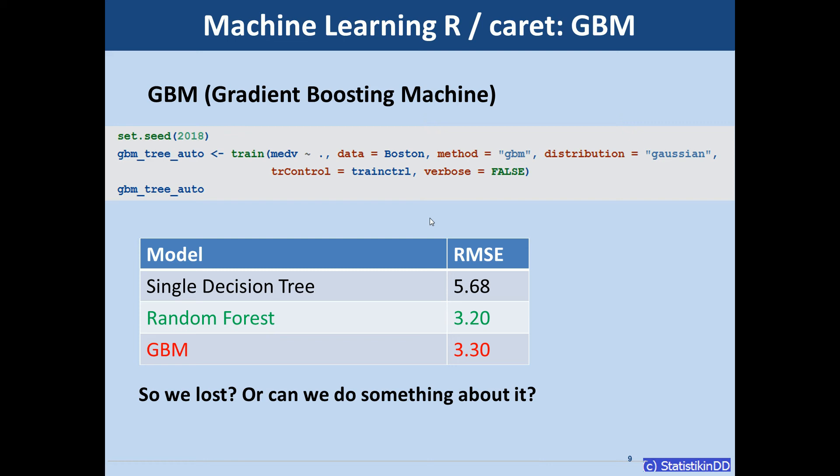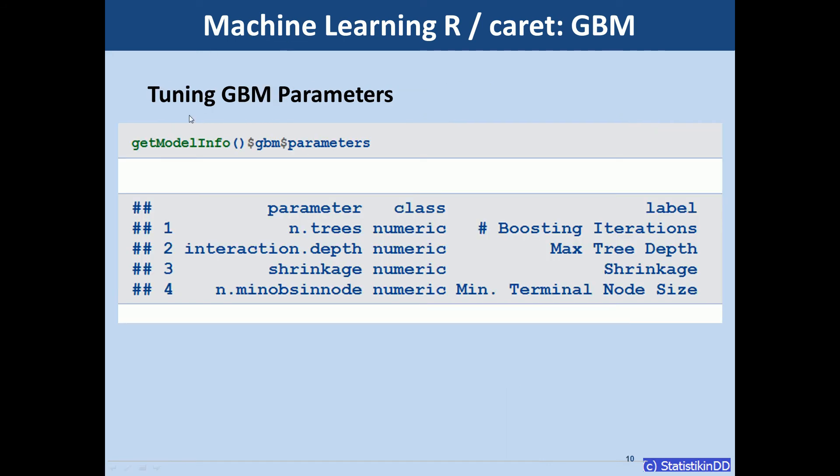We have a closer look at which parameters are used for this gradient boosting machine. And here I can use the getModelInfo function. Specify the GBM and make R display the parameters. And we see that there are four parameters here.